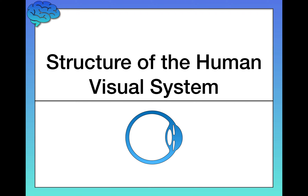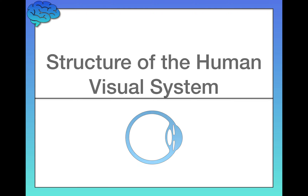In this video, we're going to continue our discussion of perception by learning more about the structure of the human visual system — that is, by learning about how we see. Psychologists have studied extensively all kinds of senses, but vision is far and away the sensory modality that we know the most about. So that's what I'm going to focus on in this video.